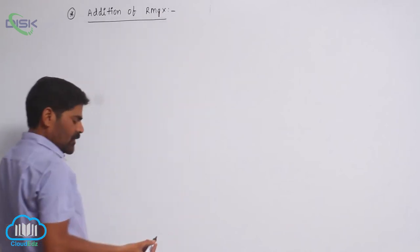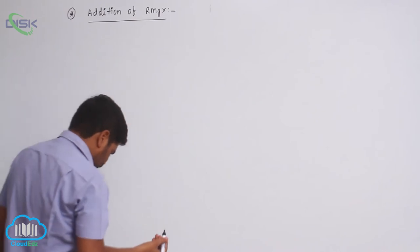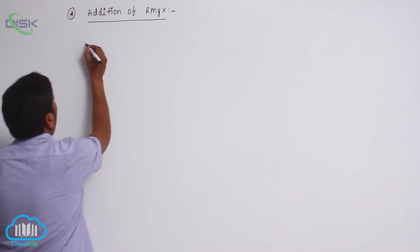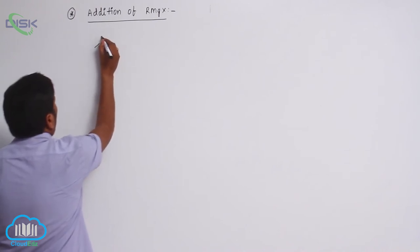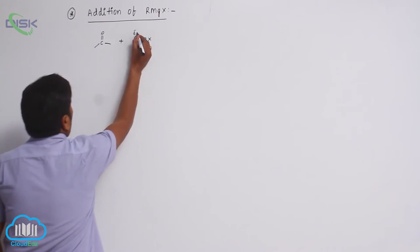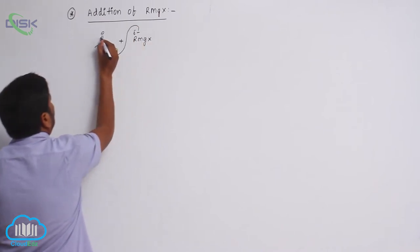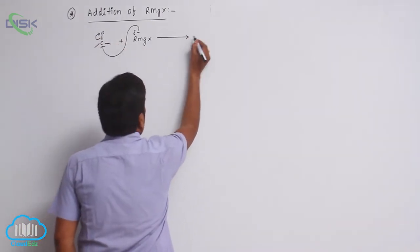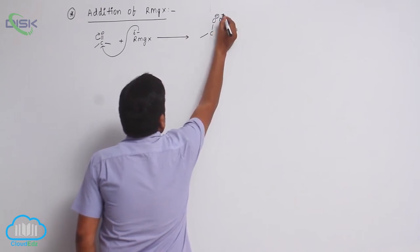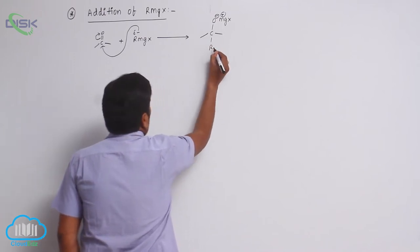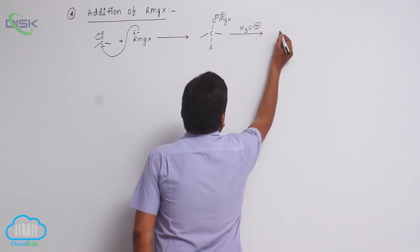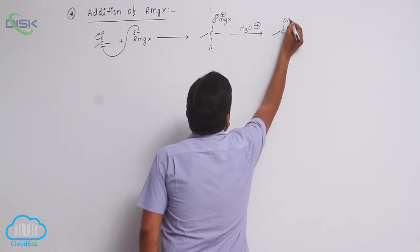Alkyl magnesium halide — when a carbonyl compound reacts with alkyl magnesium halide, it forms R-O-MgX plus, followed by acidic hydrolysis to form an alcohol.